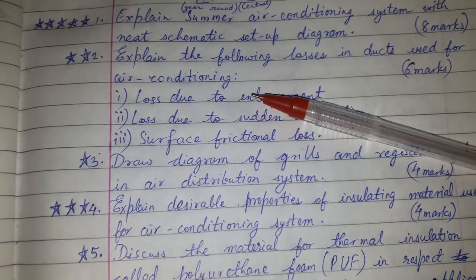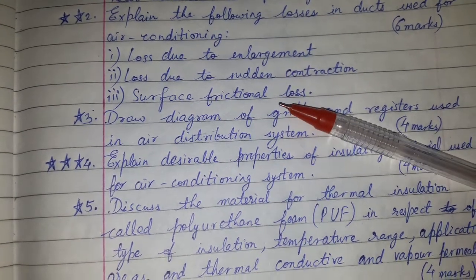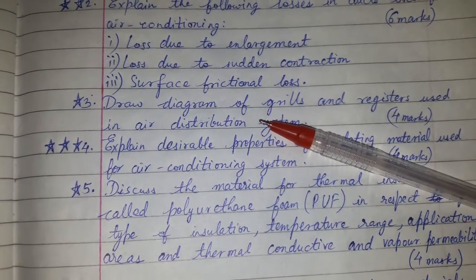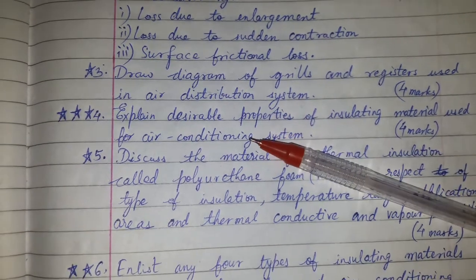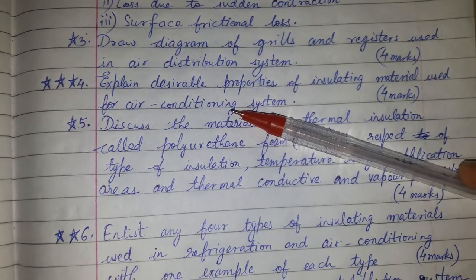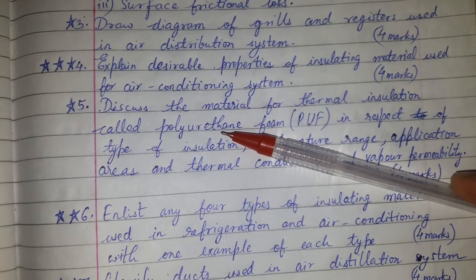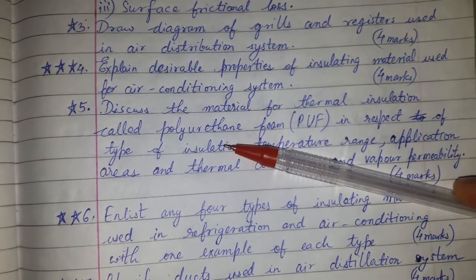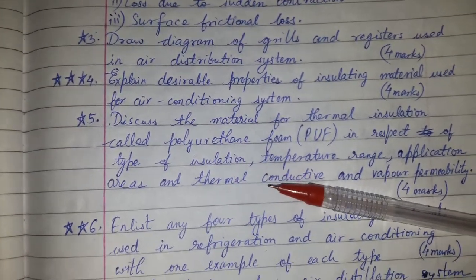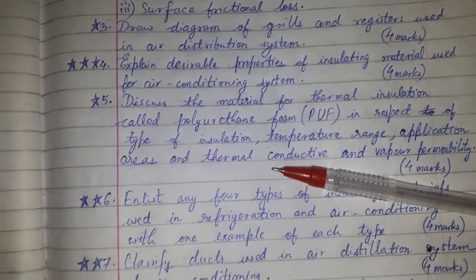Explain the following losses in ducts used for air conditioning: loss due to enlargement, loss due to sudden contraction, and surface frictional loss. Question number three: draw a diagram of grills and registers used in an air distribution system. Question number four: explain desirable properties of insulating material used for air conditioning systems. Discuss the material for thermal insulation called polyurethane foam, PUF, in respect of type of insulation, temperature range, application area, thermal conductivity, and vapor permeability. This has come for four marks.